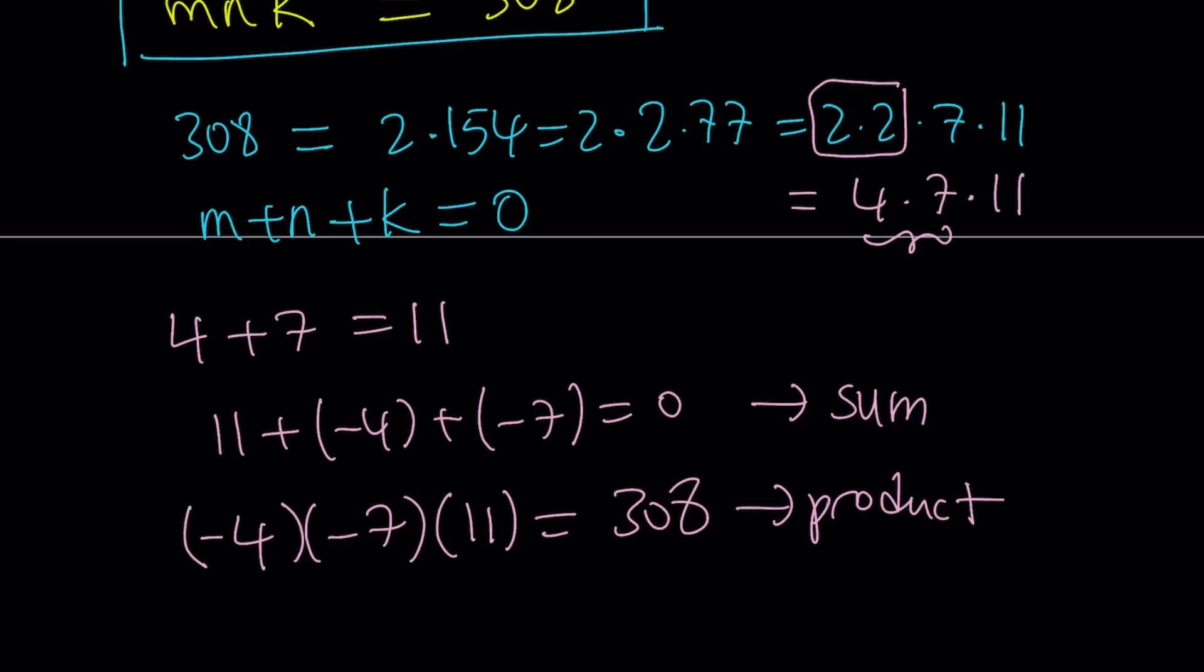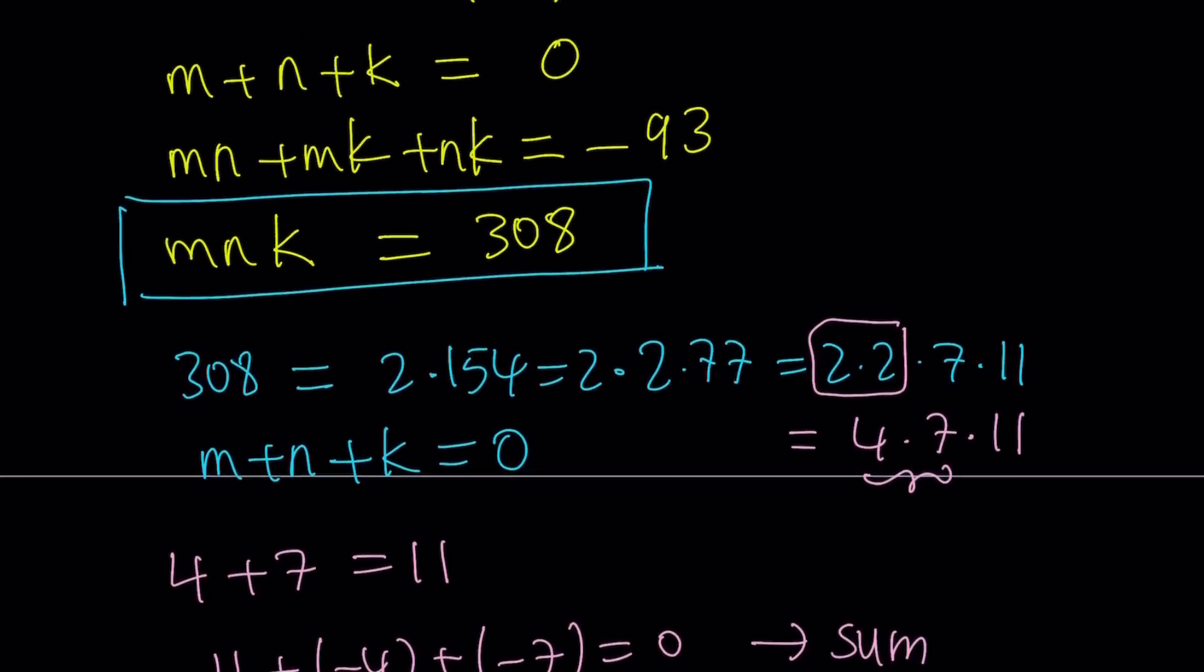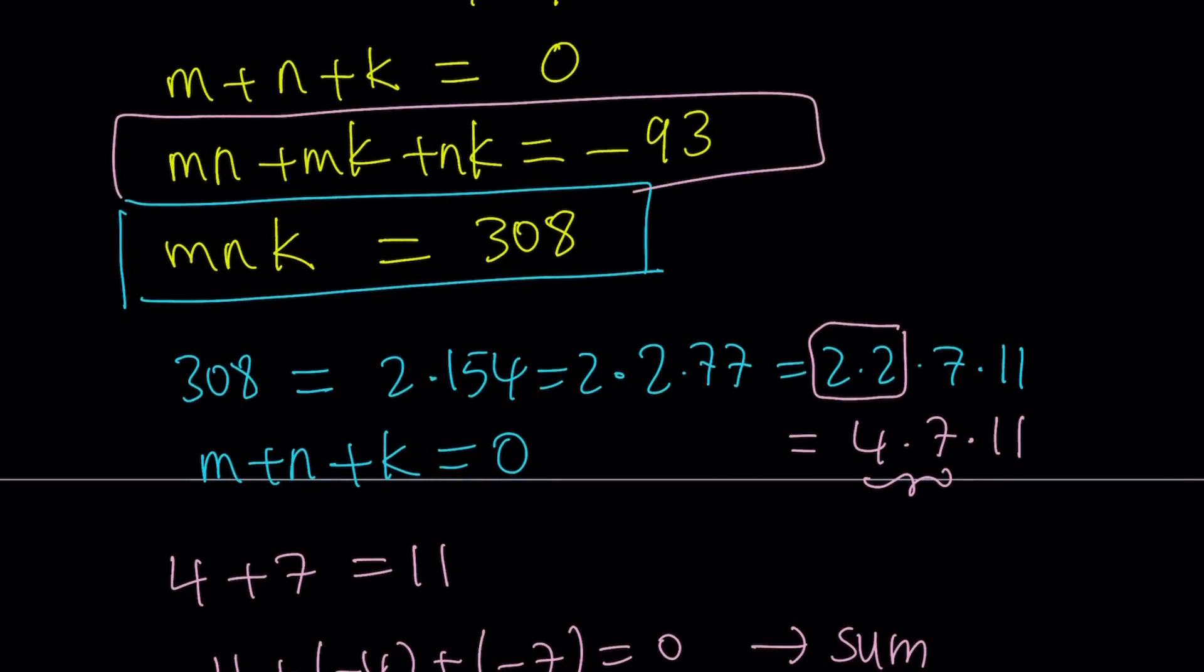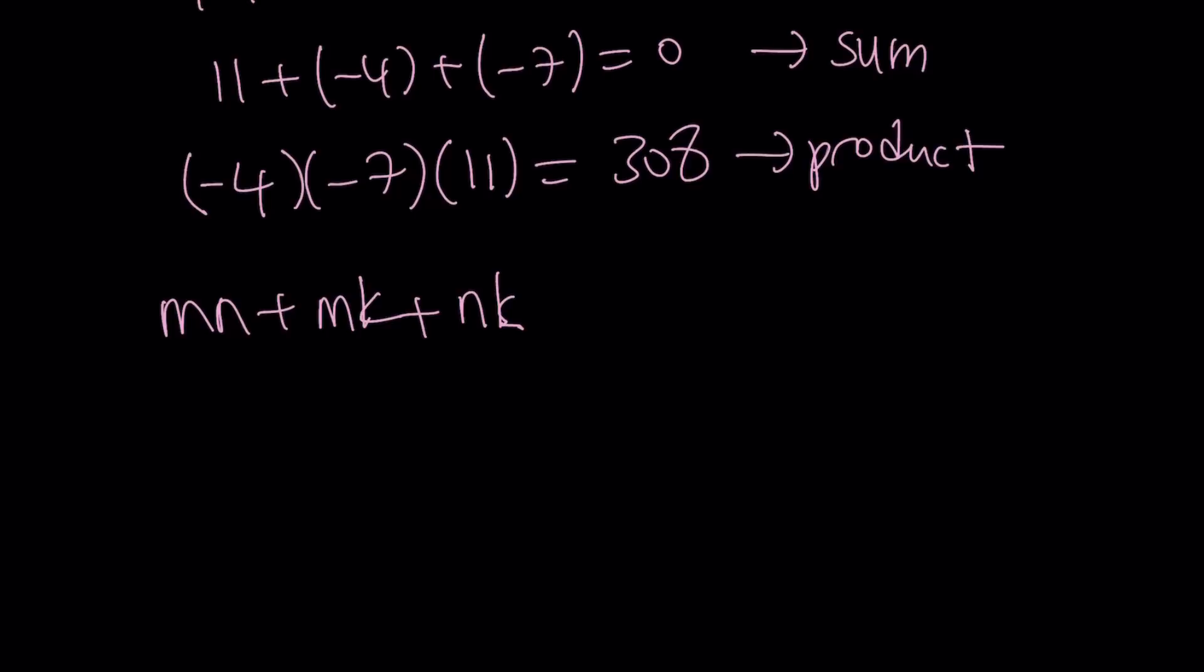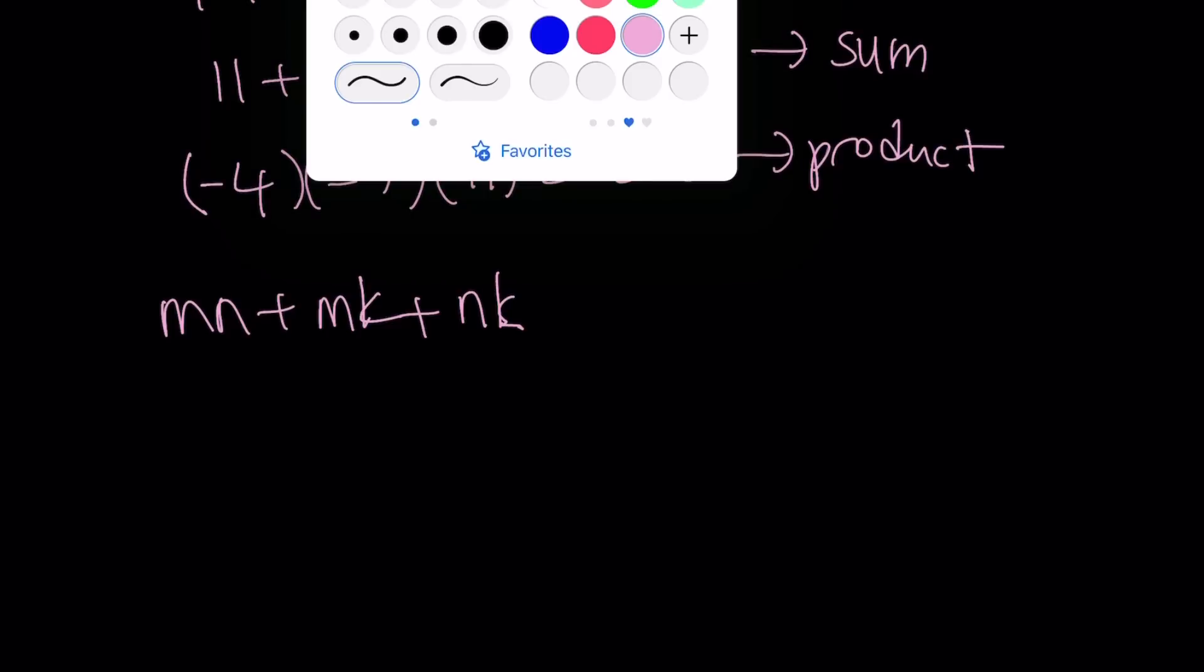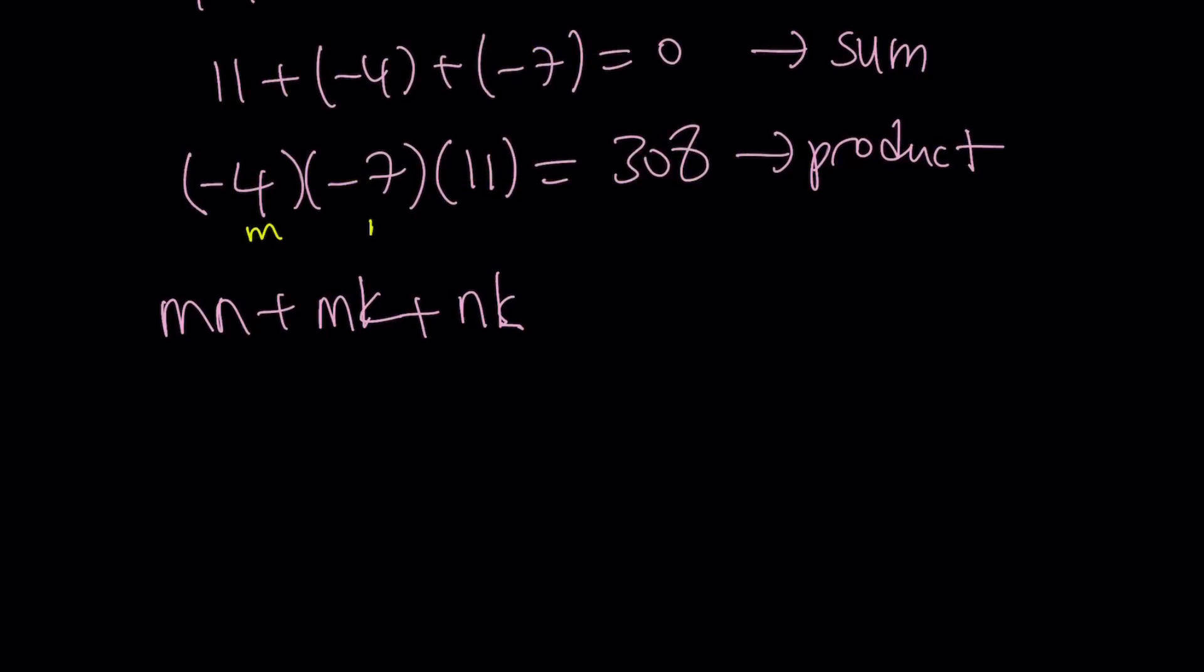We have to check one more thing. What is that? It is the mn, mk, nk thing. The two-way thingy. This one right here. How do you check that? Easy. You just plug it in: mn, mk, and nk. What is m? What is n? It doesn't matter. So let's just, because they could switch around easily. How about call this m, call this n, and call this k? Easy.